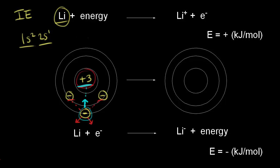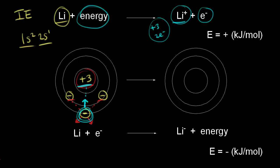Since the outer electron is attracted to the nucleus, it takes energy to completely pull away this valence electron from the neutral atom. If we pull away that outermost electron, we lose our valence electron and we're left with a lithium ion with a positive one charge, because we still have three protons but only two electrons now. Since this ionization takes energy to rip away the electron, the ionization energy is positive, and it's measured in kilojoules per mole.